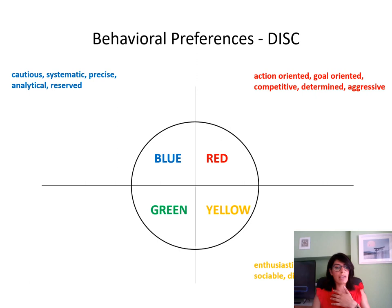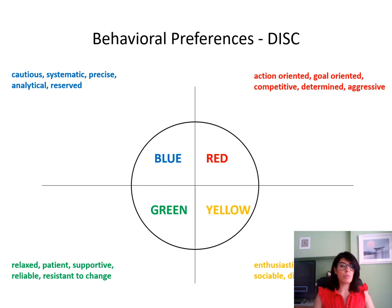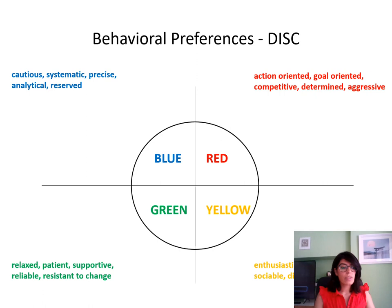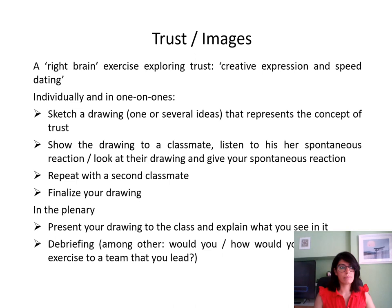The DISC model has four key areas highlighted in colours, and as personalities we will be more dominant in one area than the other. Blue is more cautious, systematic and analytical. A red behavioural preference is somebody who's more goal-oriented, determined and competitive, but also maybe a little bit aggressive. A green behavioural preference is somebody who's very relaxed and supportive, but also sometimes very resistant to change. And somebody who has a yellow behavioural preference is very enthusiastic and sociable, also quite persuasive and inspiring.